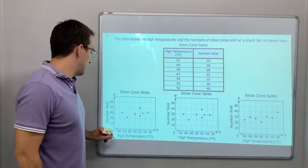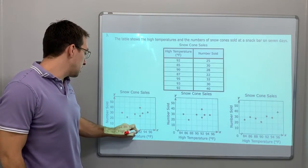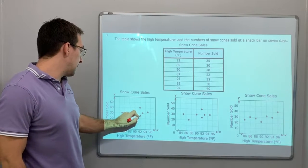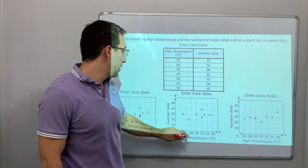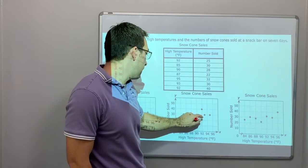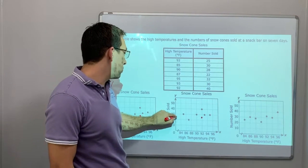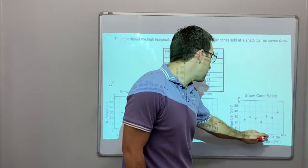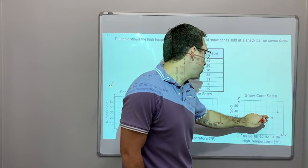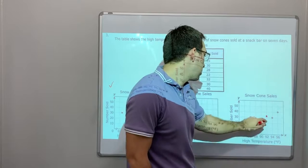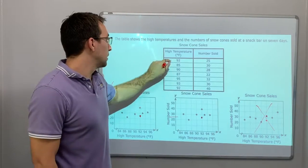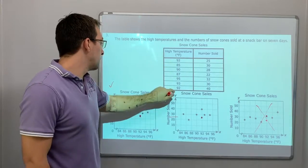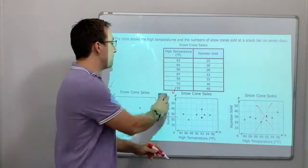92 and 25. 92, 25. Perfect. Check. 92, 25. 20, 25, 30. All right. 92 and 31. No, it should be right here. That one's wrong. So we're between A and B now.